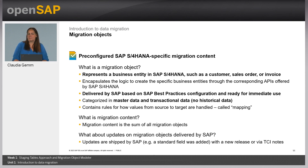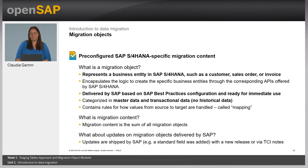You have already heard about the migration object — but what is a migration object? Each migration object represents a business entity in your S/4HANA system. They are delivered by SAP based on best practice configuration and ready for immediate use. We categorize them in master data and transactional data. And if we are talking about the migration content, then we talk about the sum of all migration objects available in the migration cockpit. Next week, my colleague Martina will explain this in more detail when you already have a better understanding of the overall migration process.